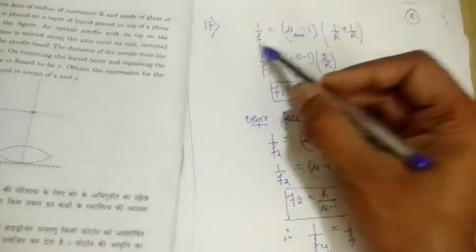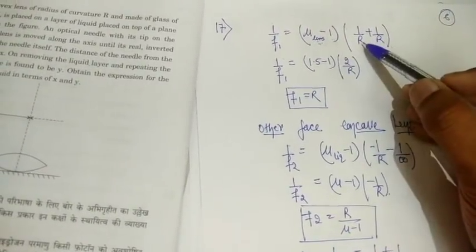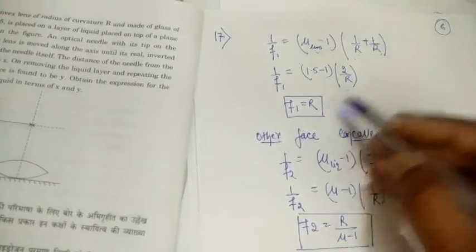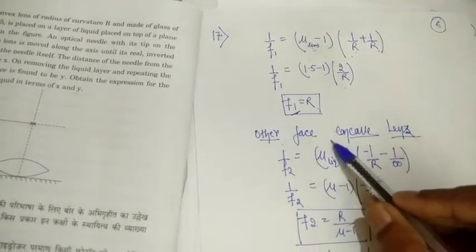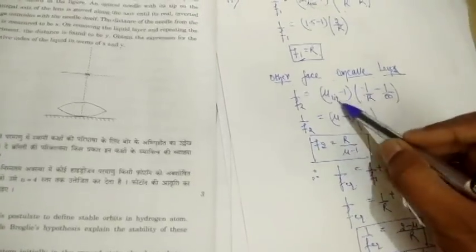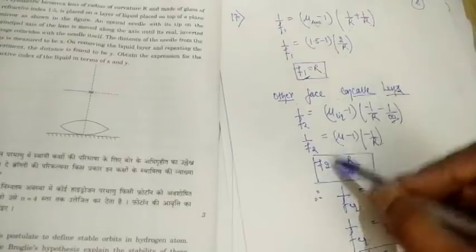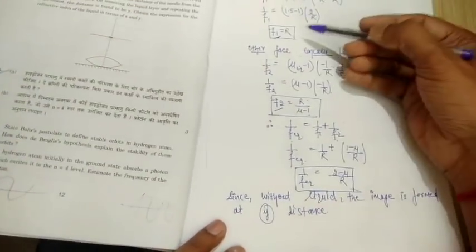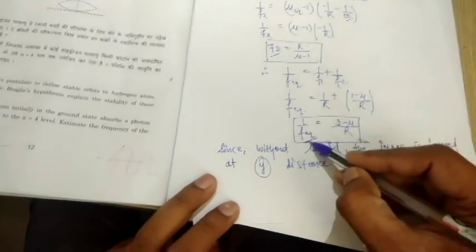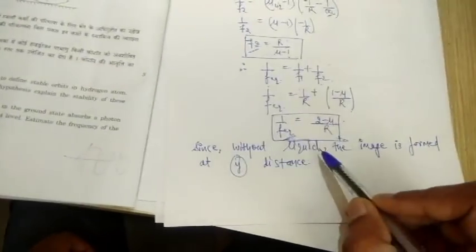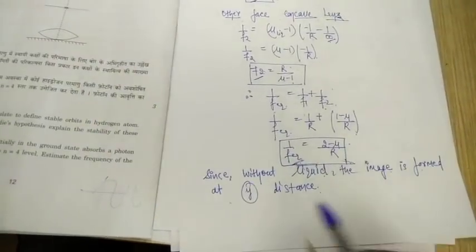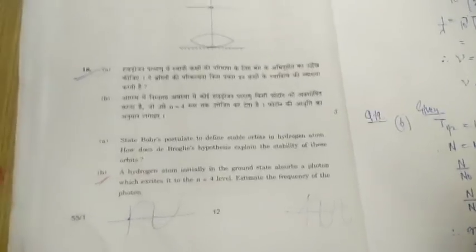Using the lens maker's formula for the upper convex surface: 1/f₁ = (μ−1)(1/R₁ − 1/R₂), substituting given values gives f₁ = R. For the liquid-glass interface behaving as a concave lens, with the second surface being a plane mirror (R₂ = ∞), we get f₂ = R/(μ−1). The equivalent focal length is 1/f = 1/f₁ + 1/f₂, giving an equivalent focal length of R/(2−μ). Without liquid, the image forms at distance y.